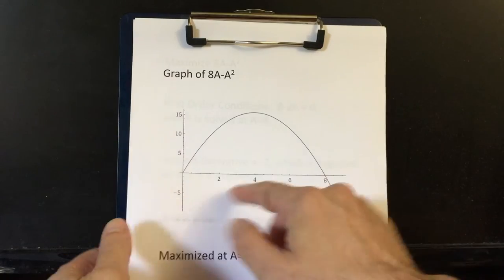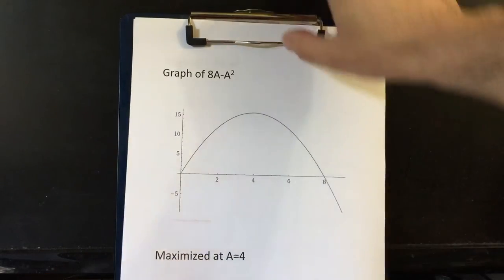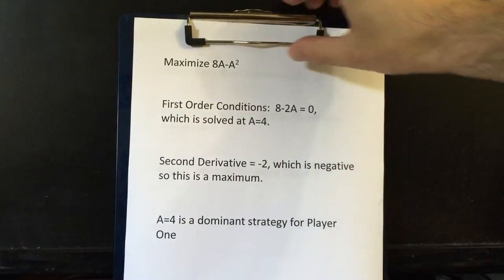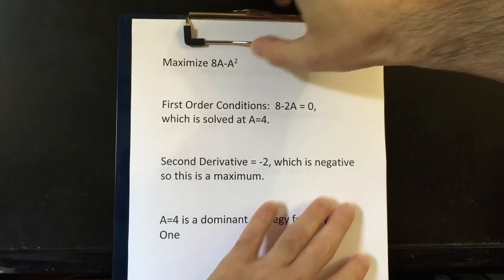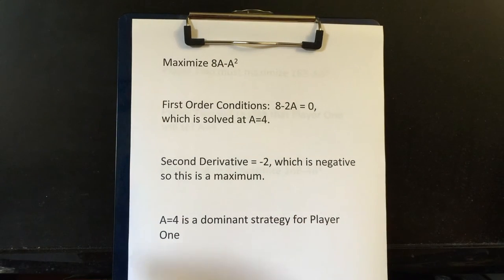That's what player one should set A at. But let's make sure this could be like 4.001. Let's just make sure that it's four using a bit of calculus. So if our goal is to maximize 8A minus A squared, then we take first order conditions. We take the derivative, and if you're more comfortable, just pretend the A is an X.